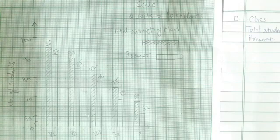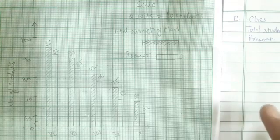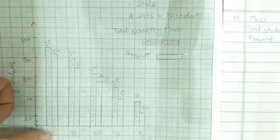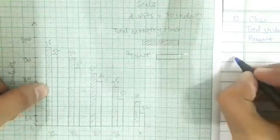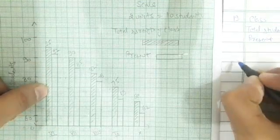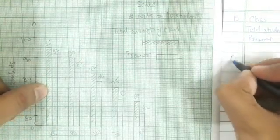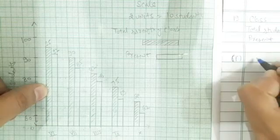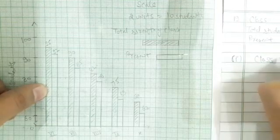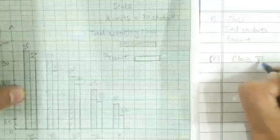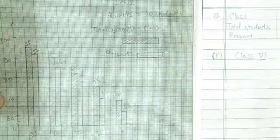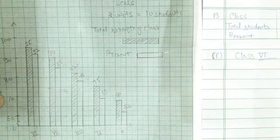The first question asks which class has the maximum number of students. From the bar graph we can see that in sixth class the highest number of students are there, so the answer to the first question is class sixth.